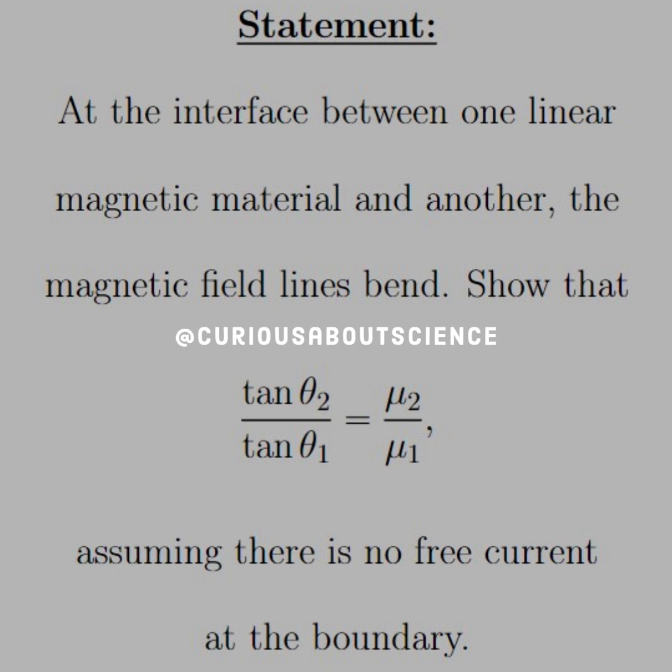So the statement reads: at the interface between one linear magnetic material and another, the magnetic field lines bend. Show that tan θ₂ over tan θ₁ equals μ₂ divided by μ₁, assuming there is no free current at the boundary.